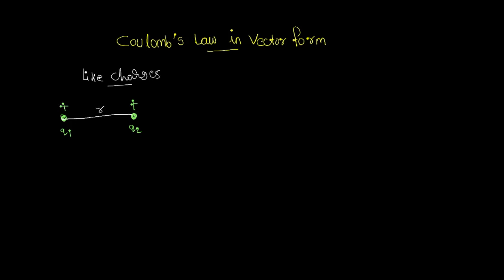We know that these are like charges, so a repulsive force is generated between them. The force acting on Q2 due to Q1 — a repulsive force — is in this direction, and that is written as F21. The force acting on Q1 due to Q2 is in this direction, and that is written as F12.